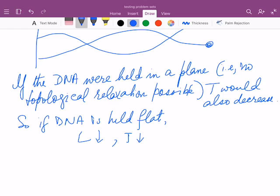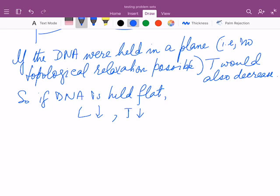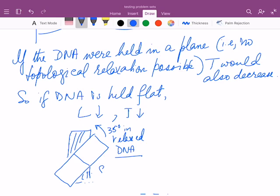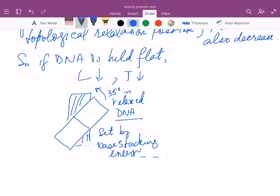The key idea to know in all problems involving DNA topology is that if you consider one base pair, then there's another base pair below it. And this angle is 35 degrees in relaxed DNA. And this is set by base stacking energy.